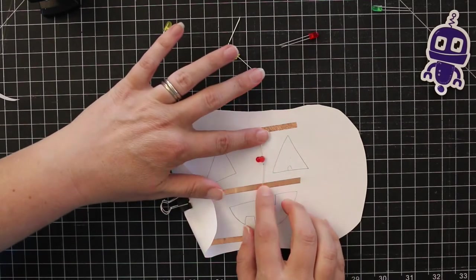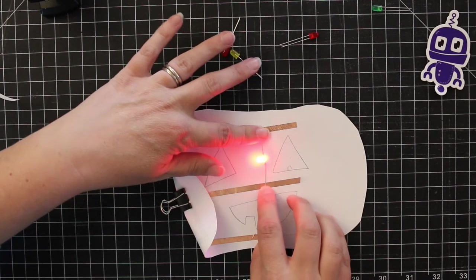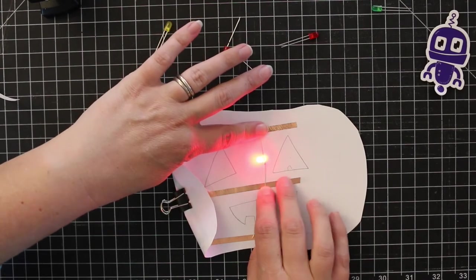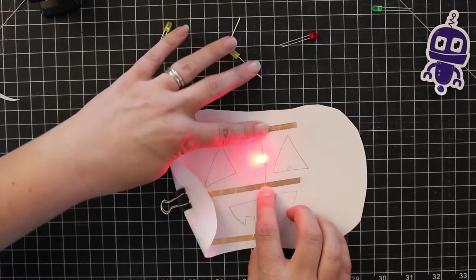Now you may find once you've got your tape down that your LED no longer lights. You want to double check and make sure that it's actually making connection with the copper tape here and not just floating over it.